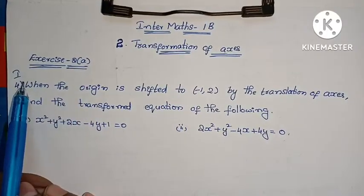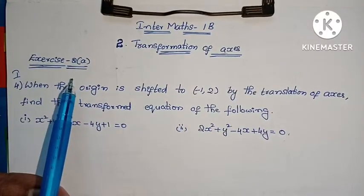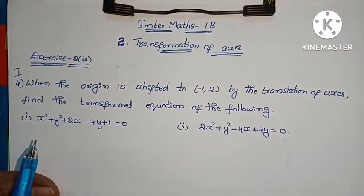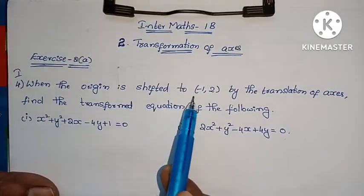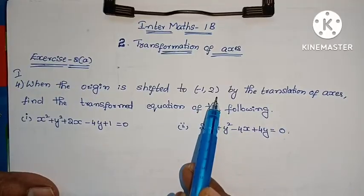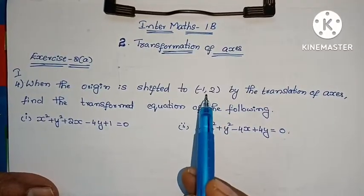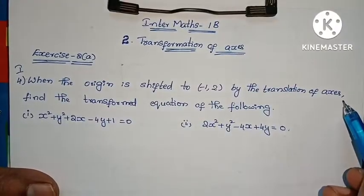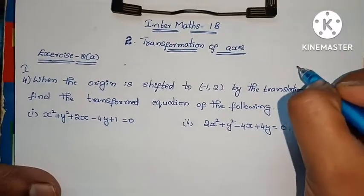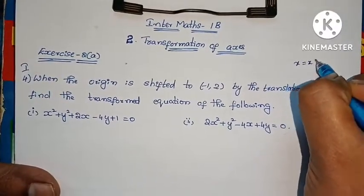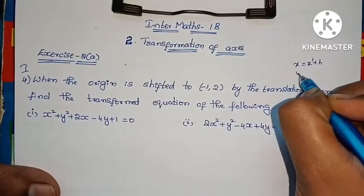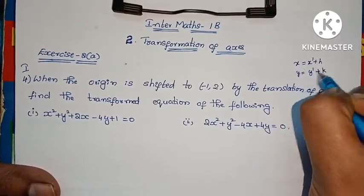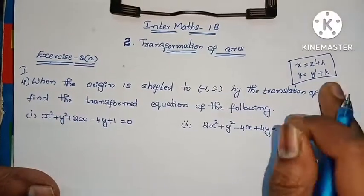You can see the first problem in this video; the fourth problem is solved. The question involves the translation of axes formula: x equals x dash plus h, y equals y dash plus k. This is the translation of axes formula.